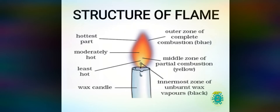So there are three zones of the flame: the outermost zone appears blue in color and it is the hottest part of the flame; the middle zone appears yellow in color and it is moderately hot; and the innermost zone appears black in color and it is the least hot part of the flame.